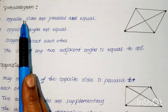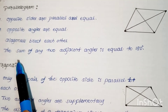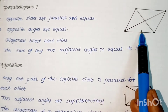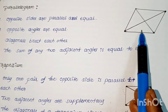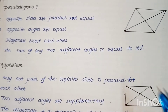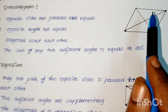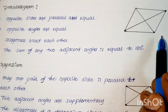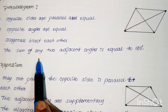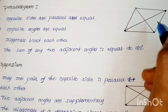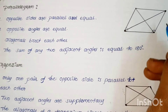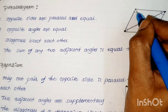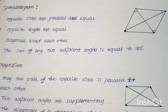In a parallelogram, opposite sides are parallel and equal. The diagonals bisect each other. The sum of any two adjacent angles is equal to 180 degrees.